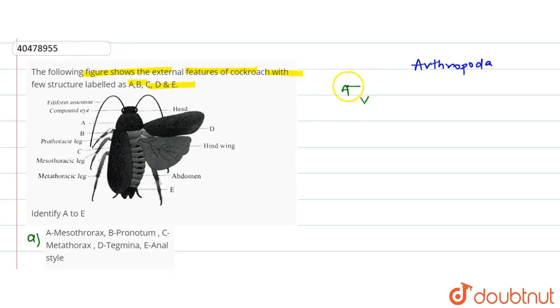If we see A, here we have a structure. In A, we have given this structure. A is actually hard covering of the upper region, which we call thorax.